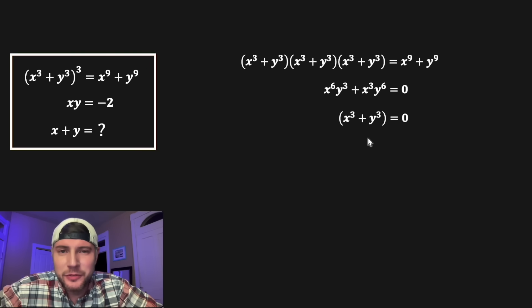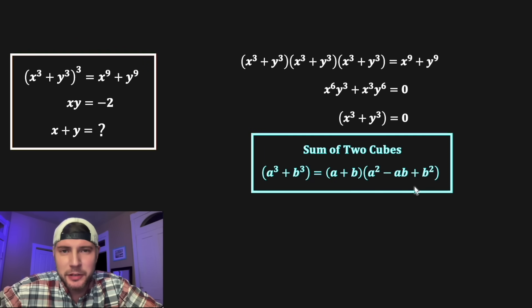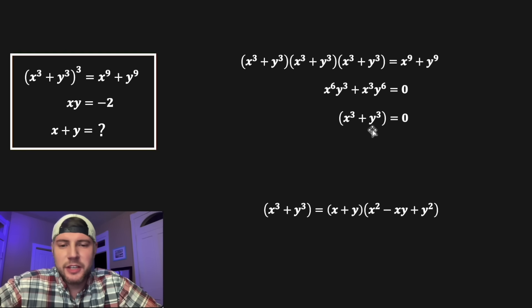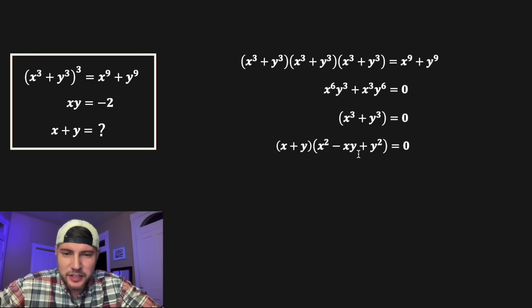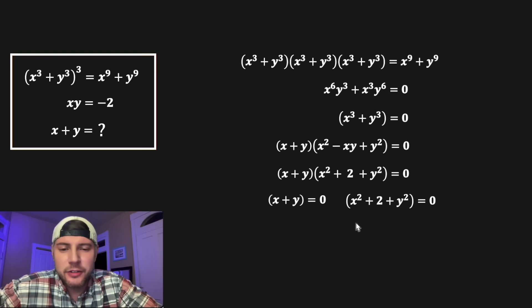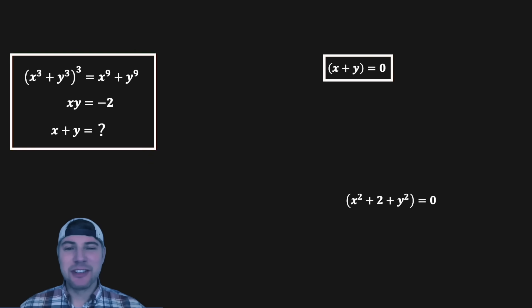Now we have the sum of two cubes. Using the sum of cubes formula — a³ + b³ = (a + b)(a² - ab + b²) — we get (x + y)(x² - xy + y²) = 0. Since something times something equals zero, either factor can be zero. The factor x + y = 0 gives us our real solution: x + y equals zero.